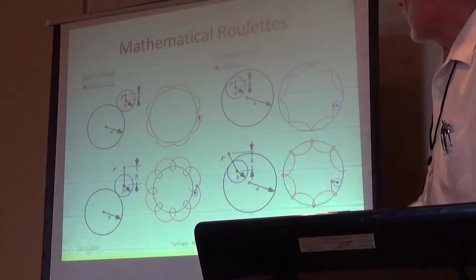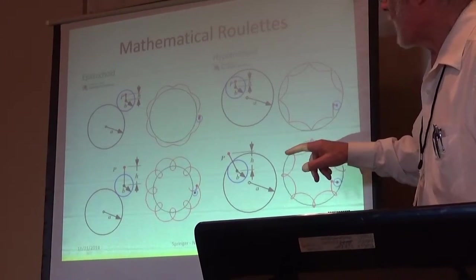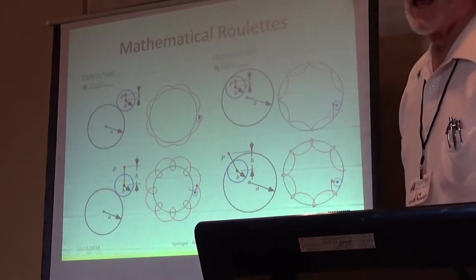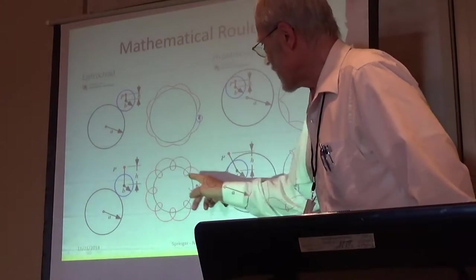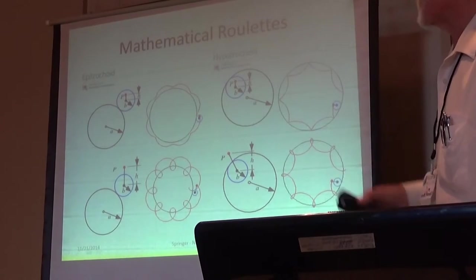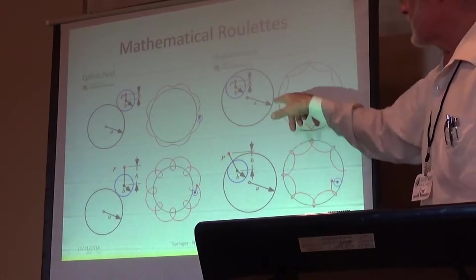If the point is outside the circle, then you get this pattern here. And if the point is right on the radius, it will line up right on the circle. The hypotrochoid is the same thing, but the disc rotating is on the inside.